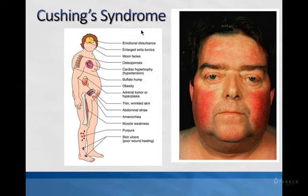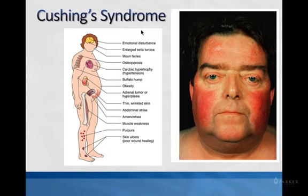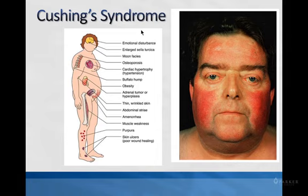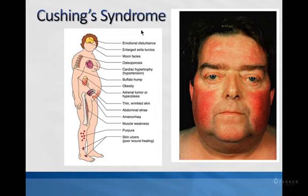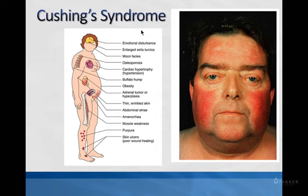With adrenal Cushing's — called Cushing's syndrome — the adrenal is not functioning properly. You might have hyperplasia of the adrenal glands, tumors, or even tumors outside the adrenal causing it to overproduce cortisol. This is referred to as a primary endocrine disorder because the adrenal itself is not working correctly.